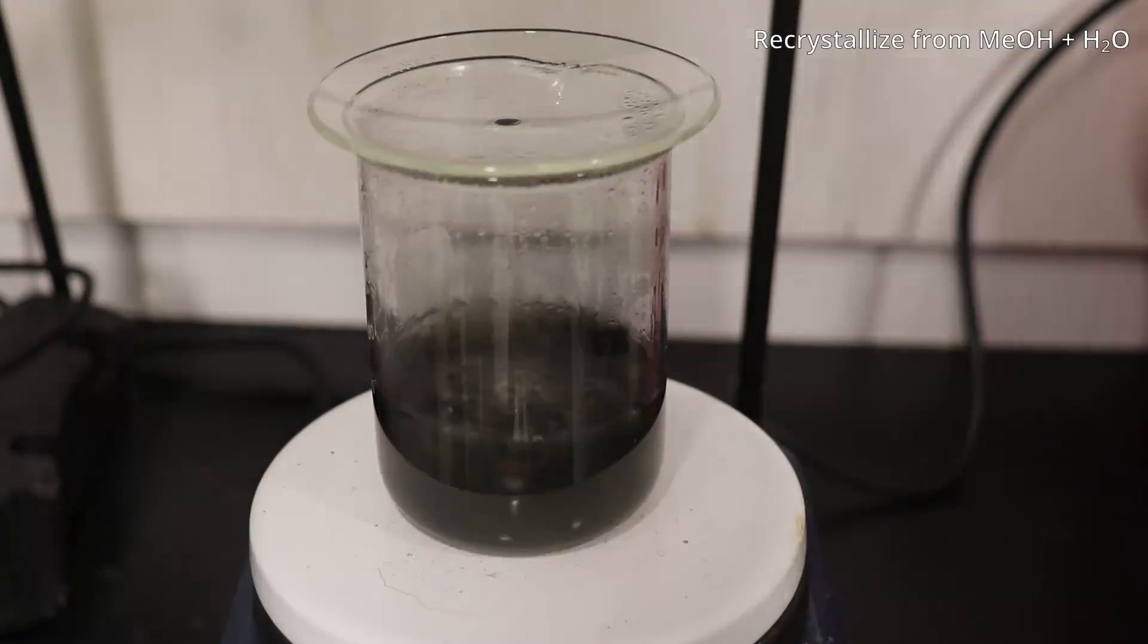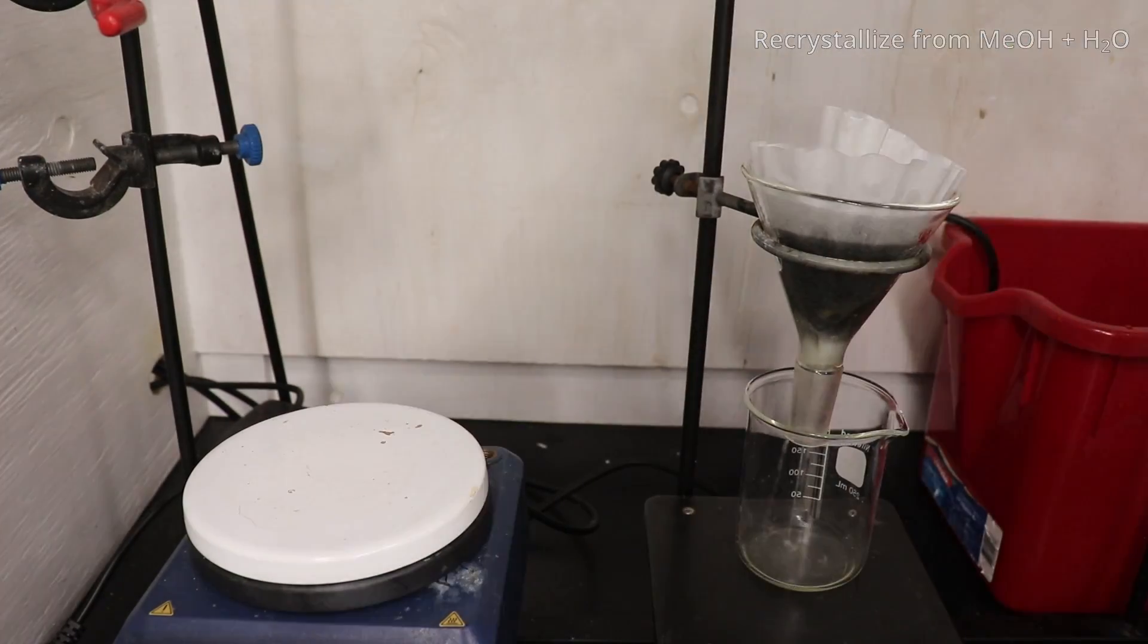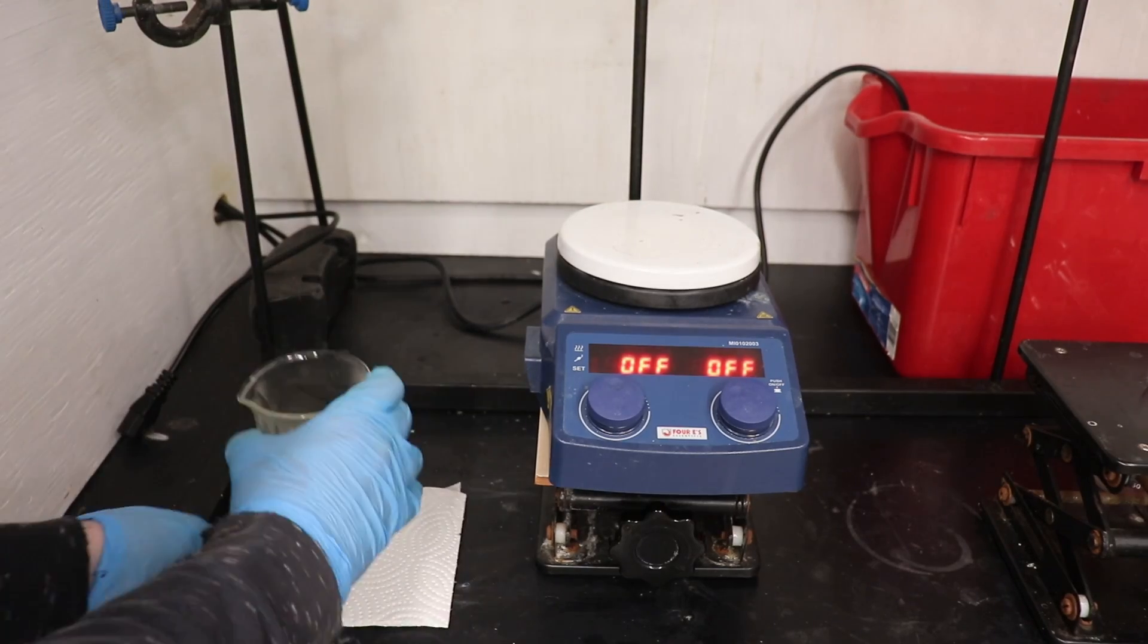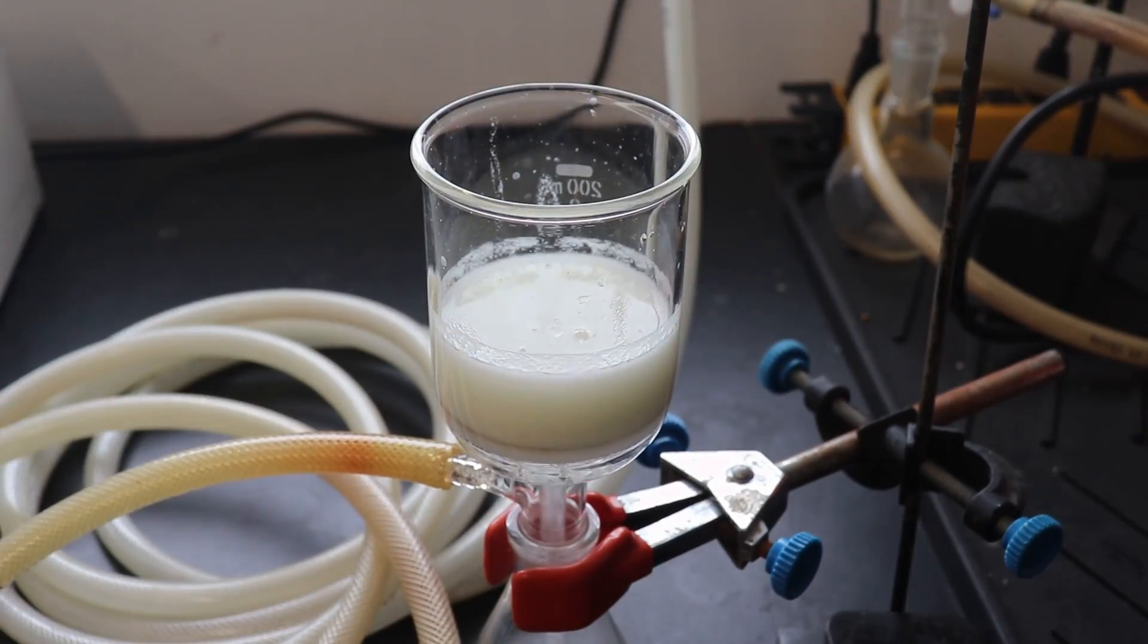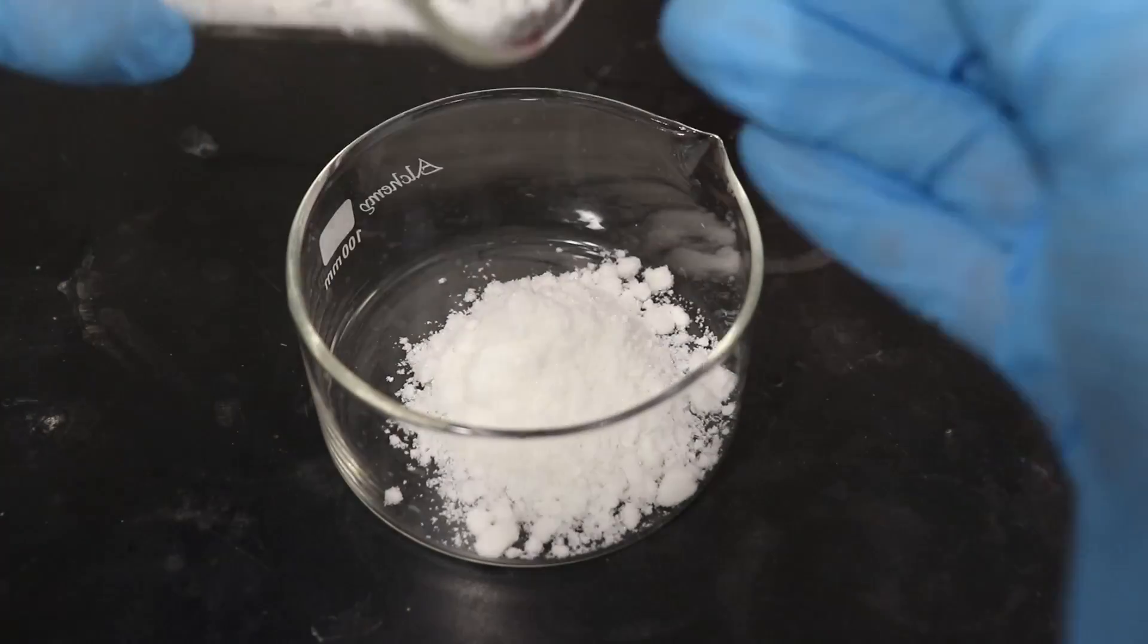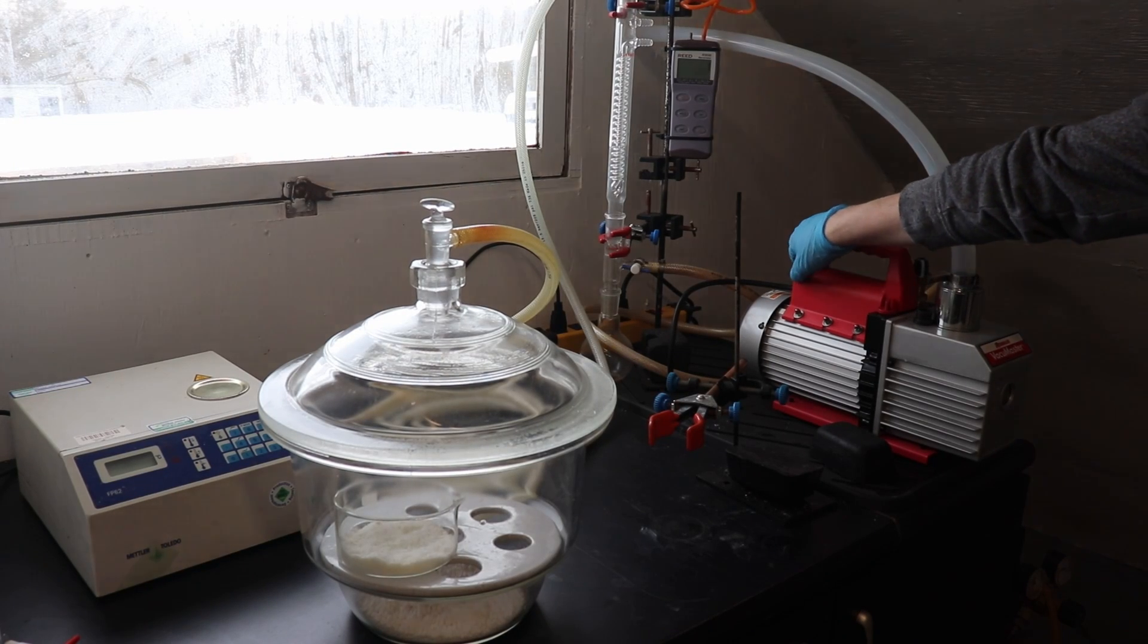The biphenyl was recrystallized from methanol and water, and activated charcoal was added to decolorize the solution. It was then hot filtered and allowed to slowly cool down to room temperature, and then placed in the freezer to cool overnight. The biphenyl was then vacuum filtered off and dried in a vacuum desiccator with calcium chloride overnight.